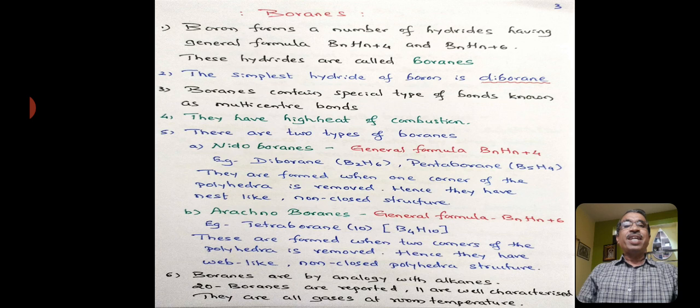The boranes have the highest heat of combustion. Similar to alkanes, alkanes also undergo combustion and give heat energy. But in case of boranes, the heat energy evolved is much higher than the heat energy that is produced in case of alkanes.